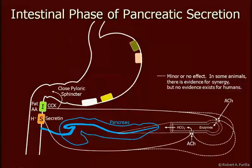Finally, there is the intestinal phase. CCK, which helps hold the pyloric sphincter closed, is triggered by fats and amino acids entering the duodenum. CCK, a member of the same family as gastrin, enhances enzyme secretion along with ACh. Secretin, released from S cells, responds to hydrogen ions in the duodenum and stimulates bicarbonate secretion in the ductal cells. There is some indication in many mammals that secretin also enhances enzyme secretion in the acinar cells, but again, we have no evidence for this in humans.